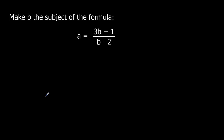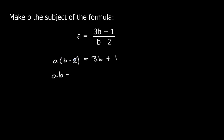Another question: this time make 'b' the subject of the formula. I've got a fraction here, so I'm going to get rid of the fraction first. I've got (3b plus 1) all over (b minus 2). To get rid of dividing by (b minus 2), I multiply both sides by (b minus 2), giving a times (b minus 2) equals 3b plus 1. Expanding the bracket: a times b is ab, a times negative 2 is negative 2a, and that equals 3b plus 1.